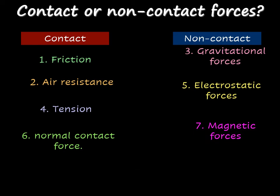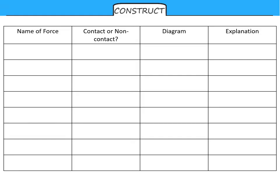Please note that the normal contact force is called that because of the angle it makes with the surface — for a table, that force will be at right angles to the table surface. On the next couple of slides, you could try to categorise each force, draw a picture, and briefly explain using the information on the previous slides.